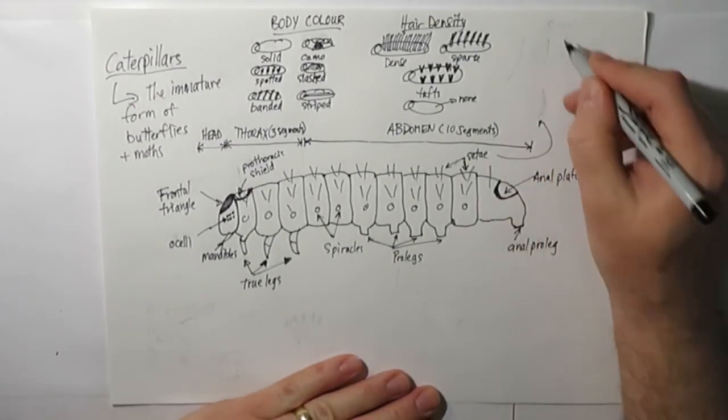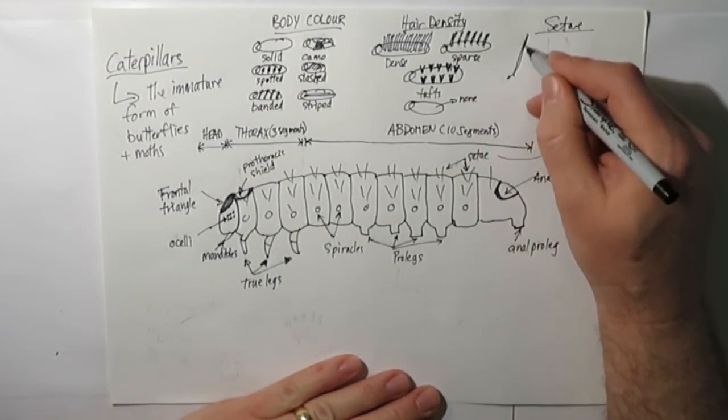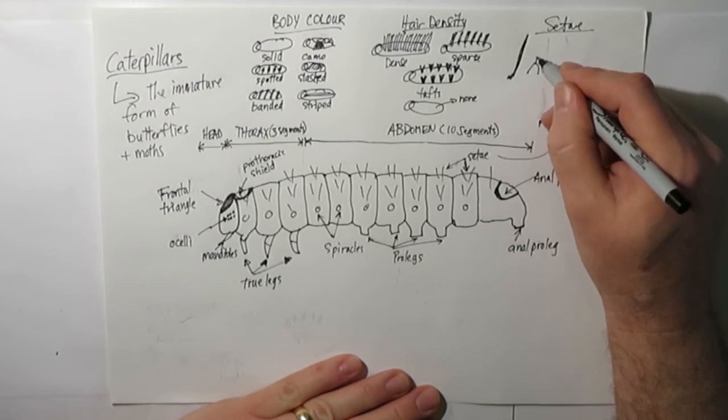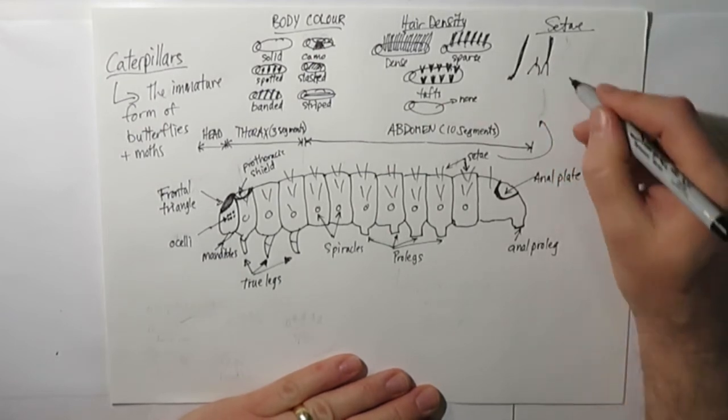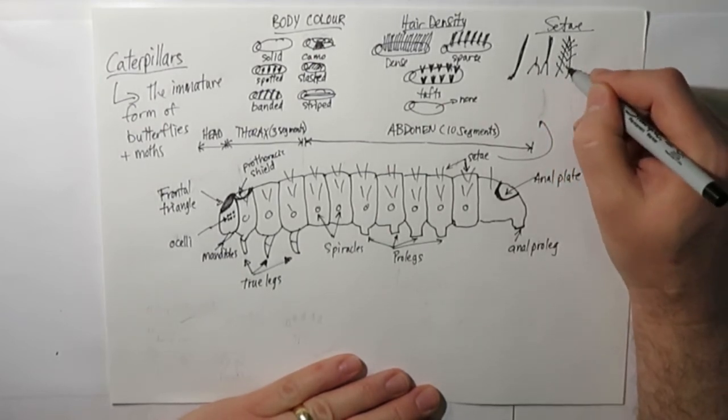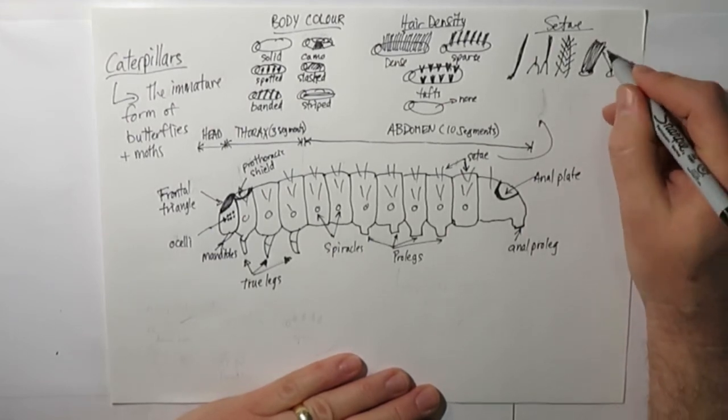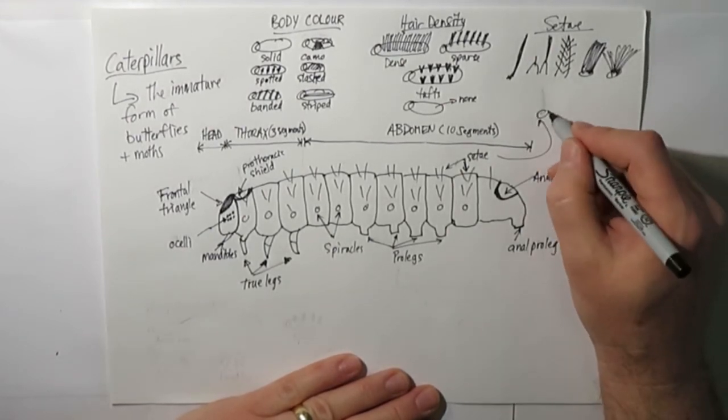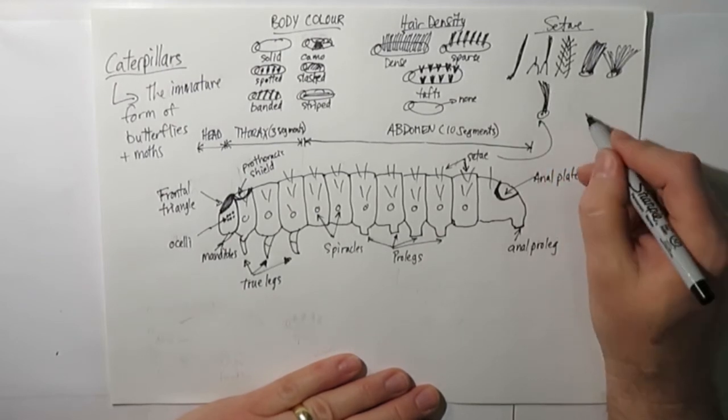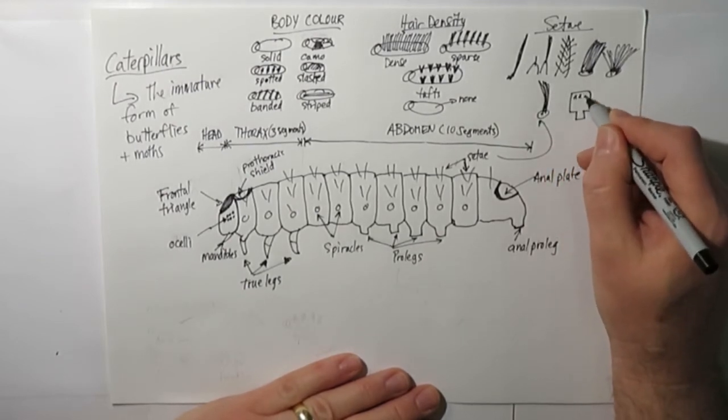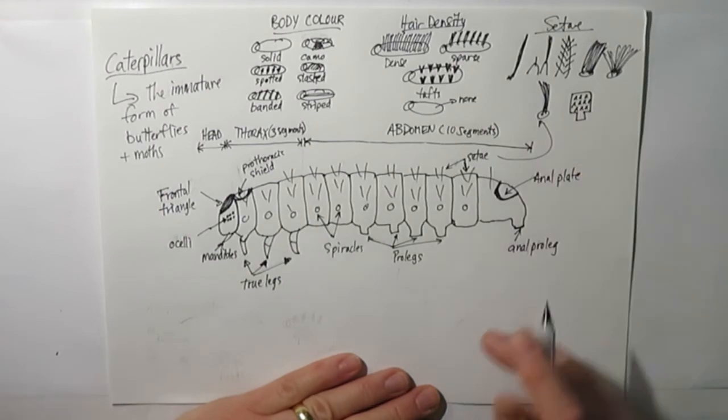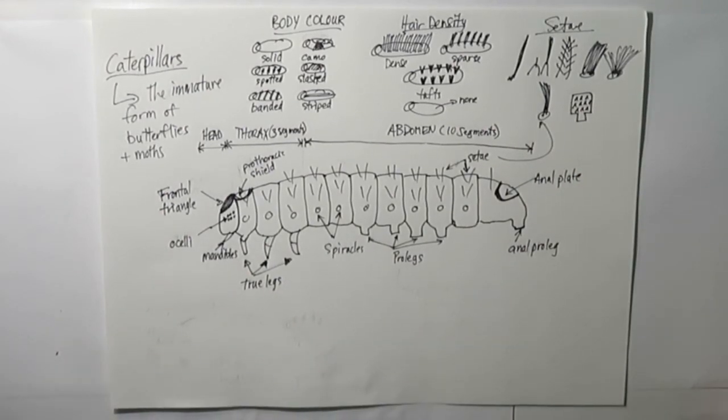When you look at the setae, you can see some differences between them. They might be solitary, they might have a little protrusion with a solitary hair, either long or short. They might have a bigger protrusion with short hairs. They might have the hairs coming out either in a clump in one direction or divergent. They might have little bristles almost, or they might have a little plate where they have little spines.